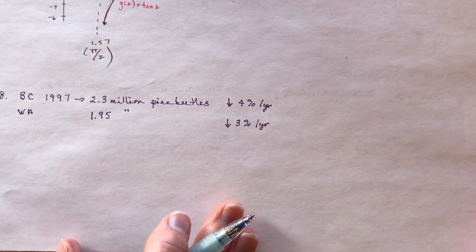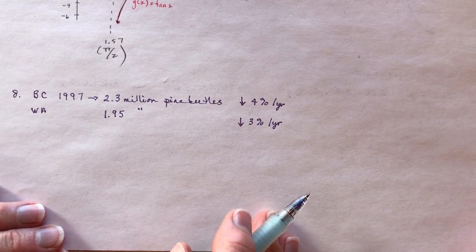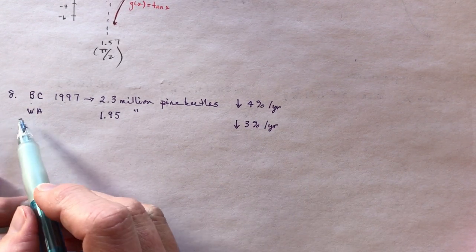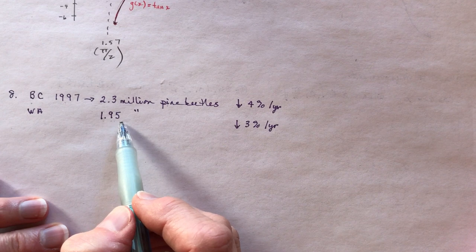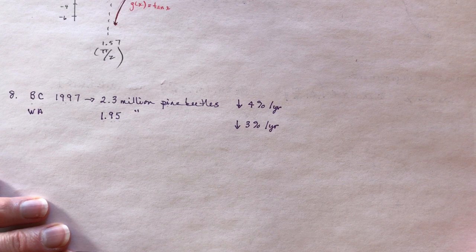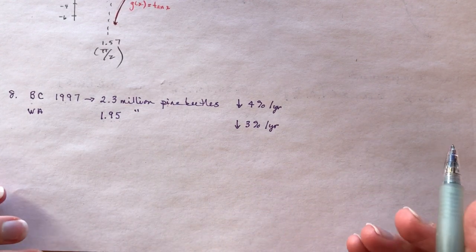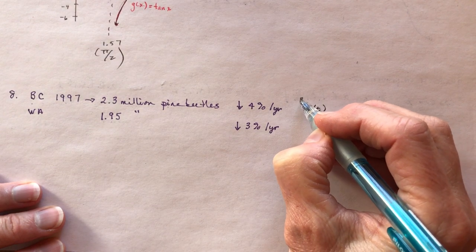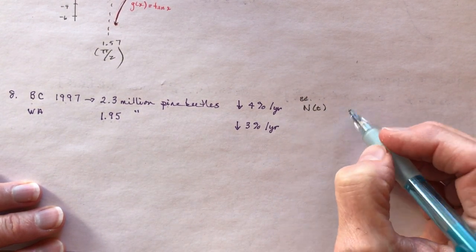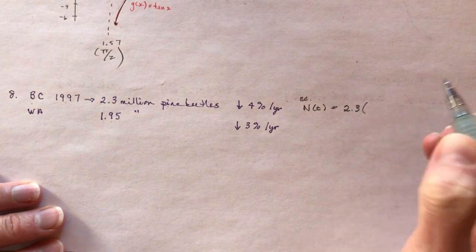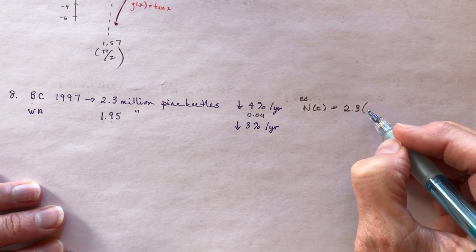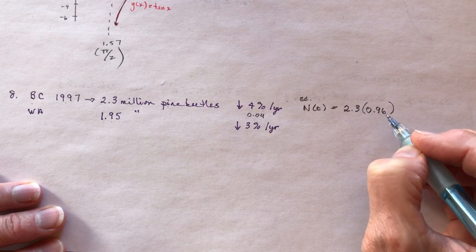The last question is a word problem. In British Columbia in 1997 there were 2.3 million pine beetles decreasing at 4% per year, while Washington state had 1.95 million decreasing at 3% per year. We need to find when there will be about the same number. The formula for BC is: N(t) = 2.3 × (0.96)^t.